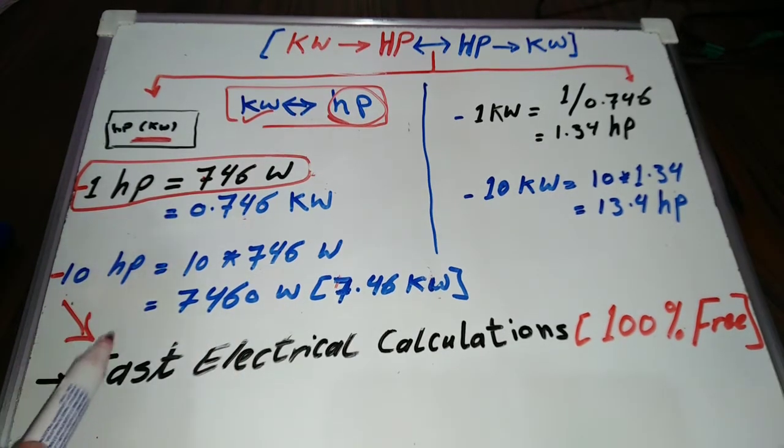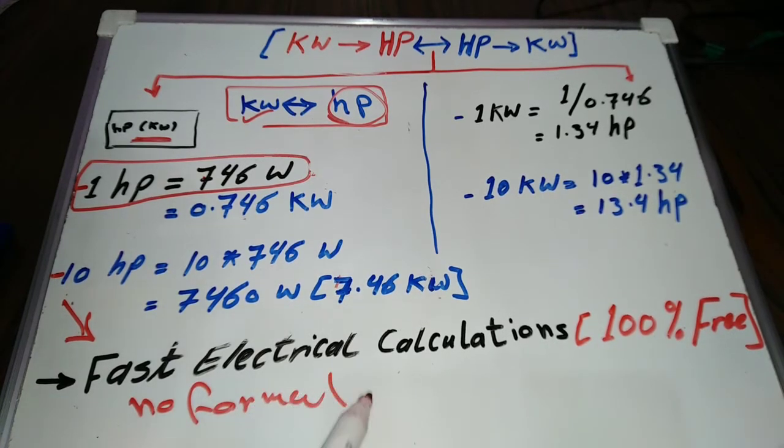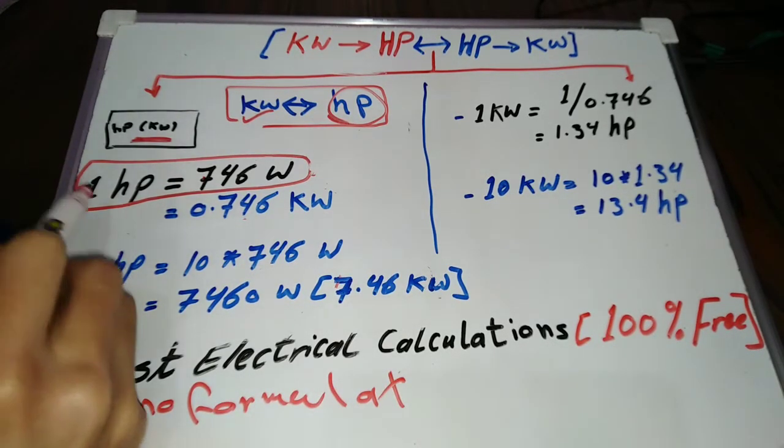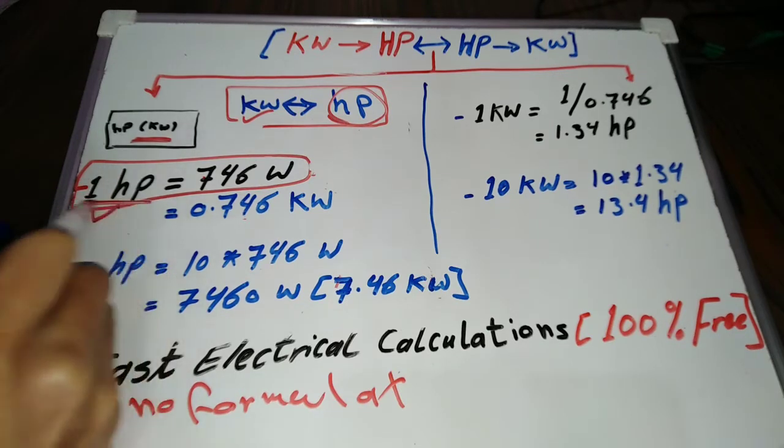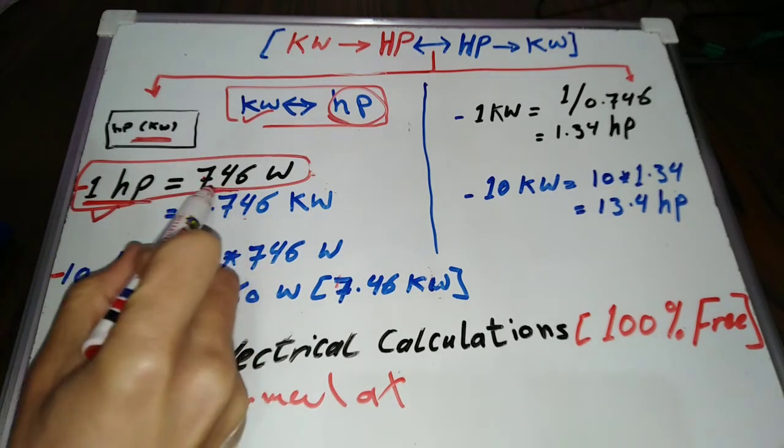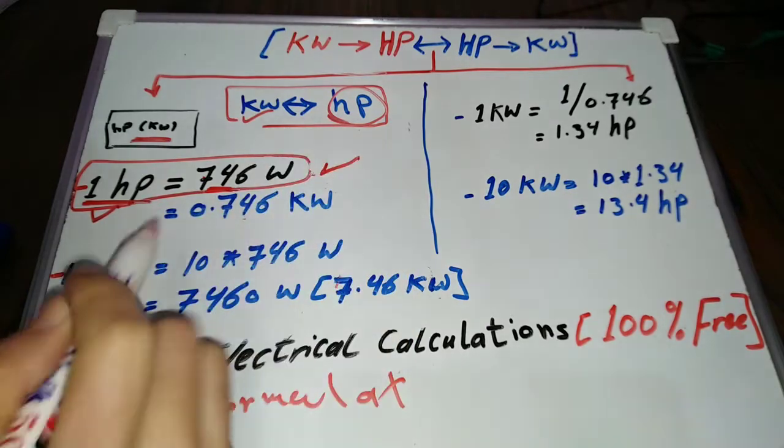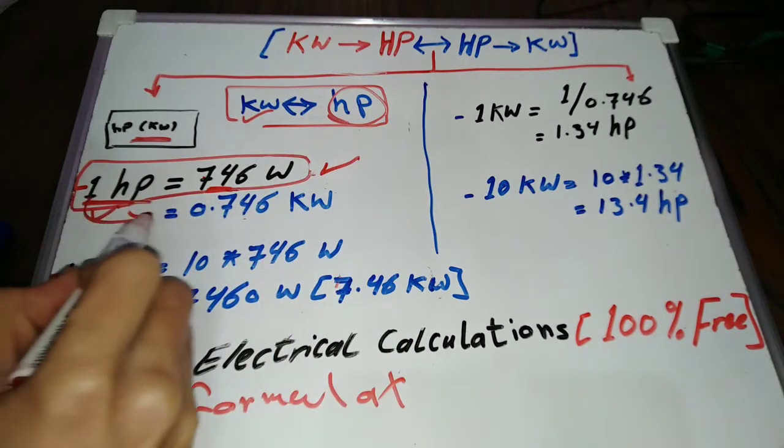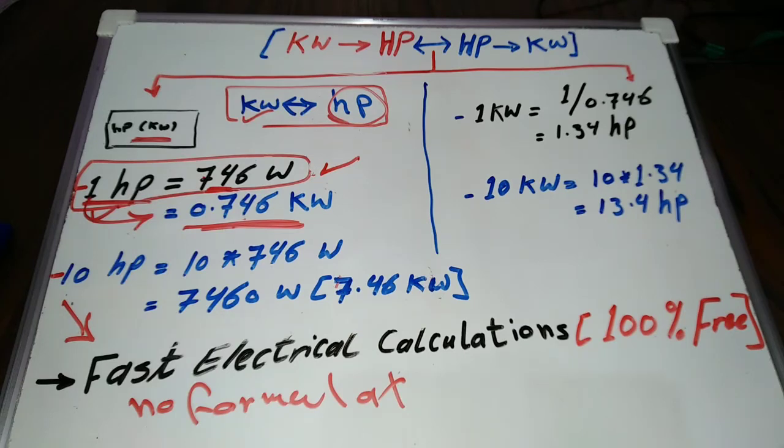Later in this video I will show you how to convert kilowatt to horsepower without any formulas. To convert kilowatt to horsepower we simply apply this formula: 1 horsepower equals 746 watt, or 1 horsepower equals 0.746 kilowatt.